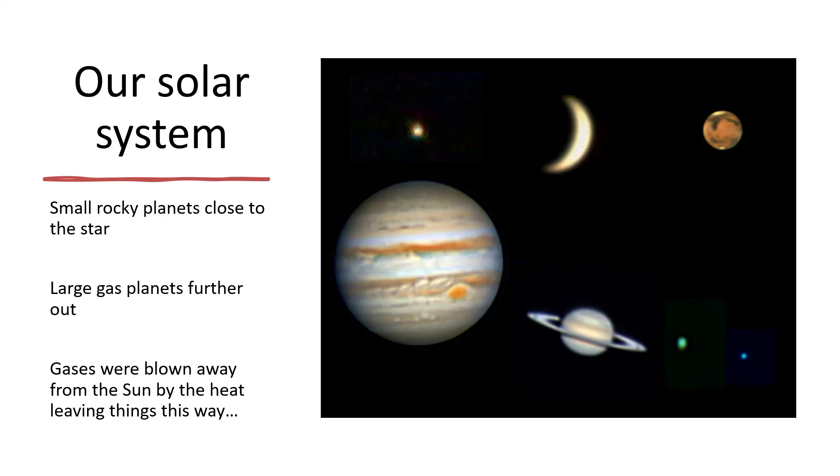And the lighter gaseous material—the hydrogen, the helium, methane, ammonia, water—all of those materials that we normally think of as gases or liquids would have been blasted and boiled away from the inner part of the solar system and ended up accumulating in the outer colder regions, much further away from the sun.